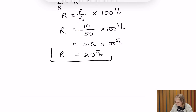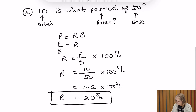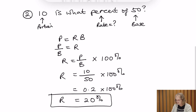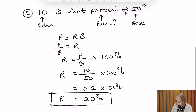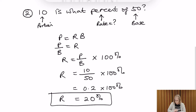Make sure you write in the percent sign so we write the answer in context. Going back to check: 10 is 20% of 50 — which we know is correct.